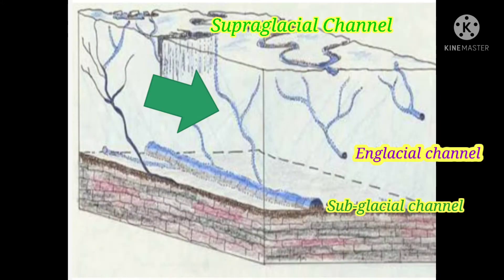Escar may also form at the surface of the glacier. When a supraglacial meltwater channel flows through the surface of the glacier, then sediments are deposited within this channel. Over time it gets filled up with sediments. After retreat of the glacier, a ridge of sediments is left behind on the outwash plain, which is known as Escar.